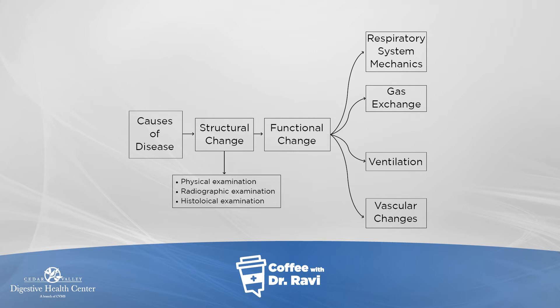What happens in COPD is this sequence of a disease cycle where either because of smoking or because of exposure to occupational or indoor pollution, structural changes in the lung take place. The structural changes in the lung then lead to functional changes. What happens is that the breathing mechanism gets altered, the gas exchange gets disturbed, the blood vessels in the lung start getting affected, and that causes some secondary changes on the heart. So all of these cycles then get linked.